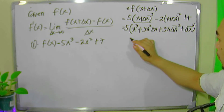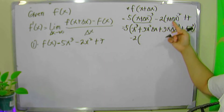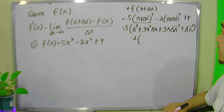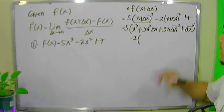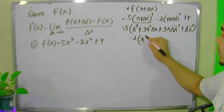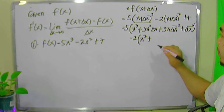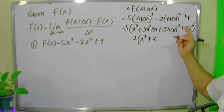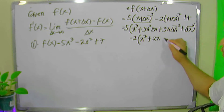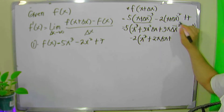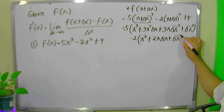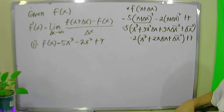We now continue with the expansion of x plus delta x squared. If we square a binomial, we start by squaring the first term, follow the sign, then twice the product of the two terms x and delta x, and the last term is the square of delta x. And then we have 7.